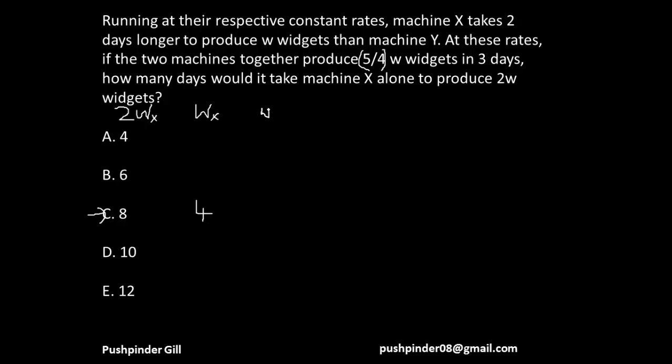Now let's move ahead. So how many days will machine Y be taking to produce the same number of widgets? It's gonna take two days less because machine X takes two days longer to produce W widgets than machine Y. So machine Y is gonna take two days. So together they're gonna finish the widgets in 4 times 2 divided by 4 plus 2, so together they're gonna finish in 8/6 days.